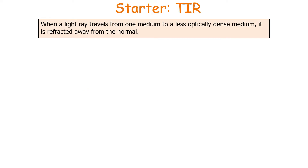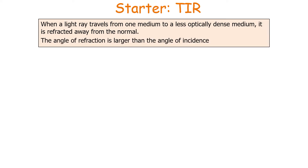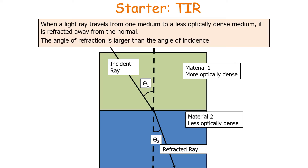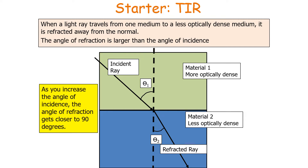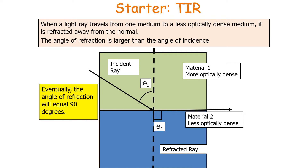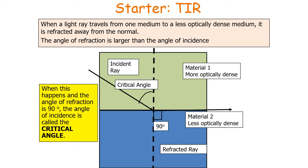When a light wave travels from one medium to a less optically dense medium, it is refracted away from the normal, so the angle of refraction is larger than the angle of incidence, as shown in this diagram. As you increase the angle of incidence, you increase the angle of refraction, and that angle of refraction will get closer and closer to 90 degrees. Eventually, if you keep increasing the angle of incidence, the angle of refraction will equal 90 degrees, and the light refracts along the boundary. The angle of incidence at which this happens is called the critical angle.